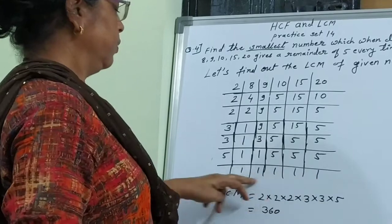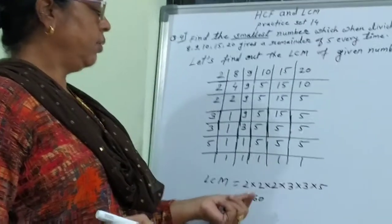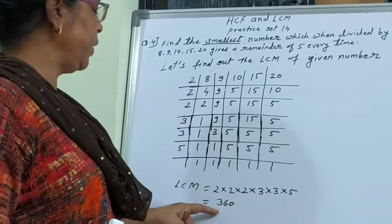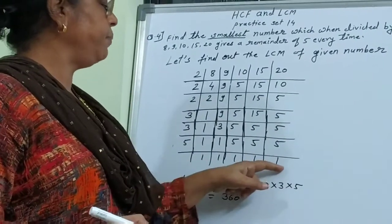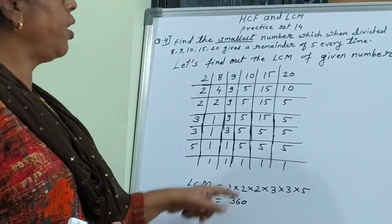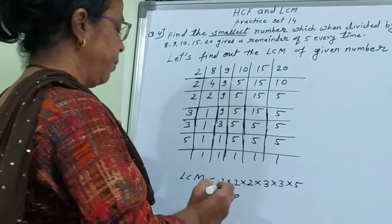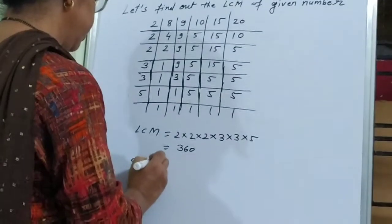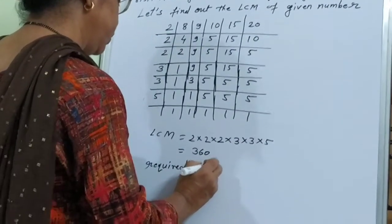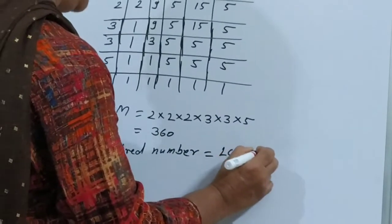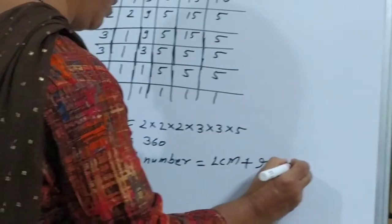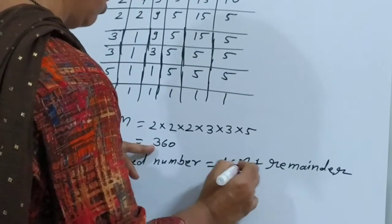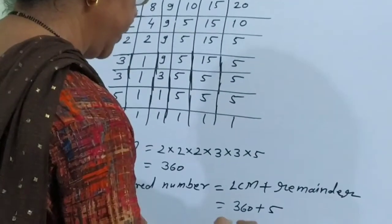360 is the completely divisible number. But here the question asks for a remainder of 5 every time. So we need to add the remainder. P = LCM + remainder, which gives us 360 + 5 = 365.